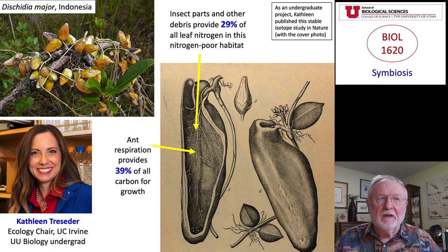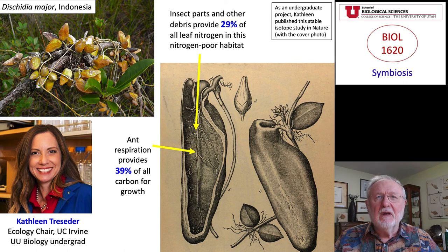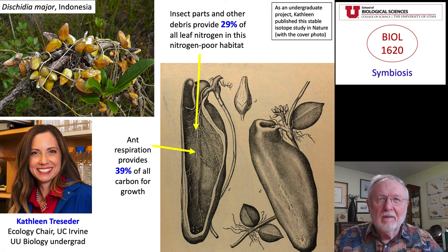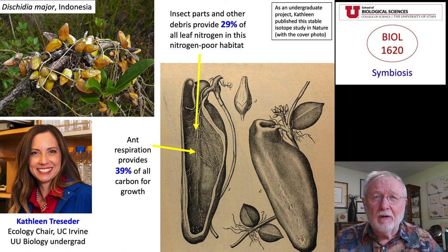What Kathleen did went a bit further. Using stable isotope analyses, she showed that nearly 40% of all the carbon associated with plant growth came from ant breath — 40% of the carbon came from the exhalation of ant respiration. And nearly 30% of all the nitrogen in that leaf came from the decomposition of insect parts and materials the ants brought in. I call this an example of ecological etiquette: polite houseguests, such as ants, always bring their hosts a gift — in the form of nitrogen and carbon.